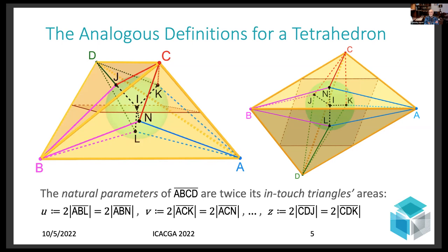And you can see that perhaps even more clearly on the right, where the edge AB and the corresponding in-touch triangles ABN and ABL are clearly congruent. And that means that just as the Heron parameters are defined as the length of the segments into which the sides of the triangle are divided by their in-touch points, I'm going to define what I'm going to call the natural parameters of a tetrahedron to be twice the in-touch triangles' areas, as shown here. So there are 12 in-touch triangles all in all, but because they come in congruent pairs, there are only six such parameters denoted by u, v, and so on, up through z.